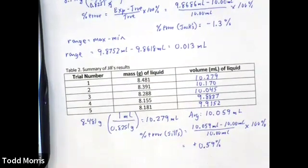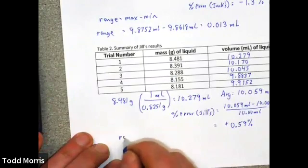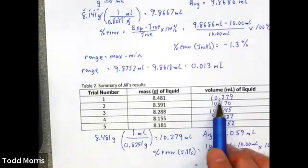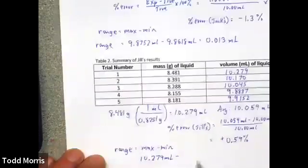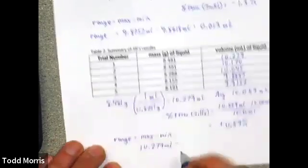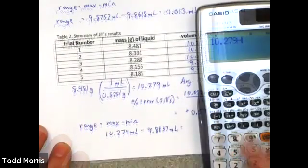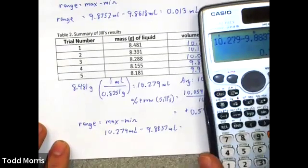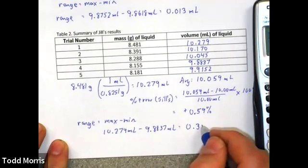Finally, to determine how precise Jill was, we will once again calculate the range. The maximum volume that she delivered minus the minimum volume. Our maximum volume was in trial number one, 10.279 milliliters. And the minimum volume was in trial four, 9.8837. To give her a range from her data of about 0.395, which rounds to about 0.4 milliliters.